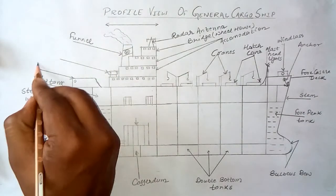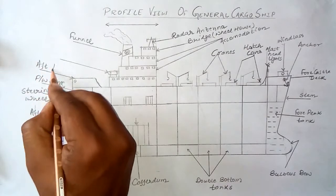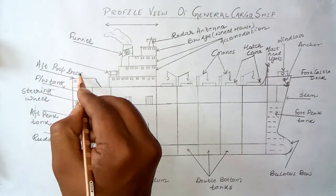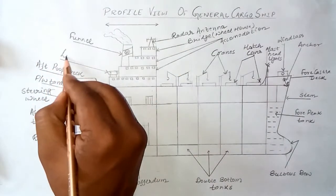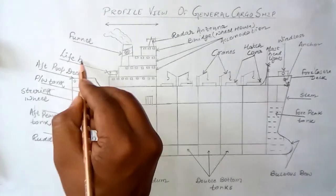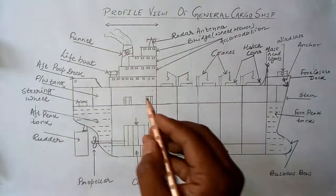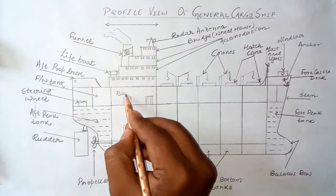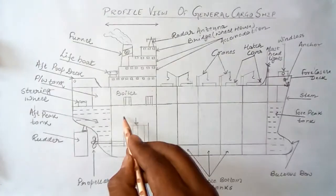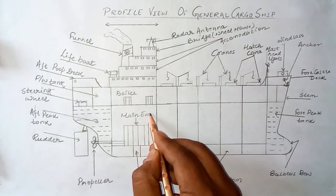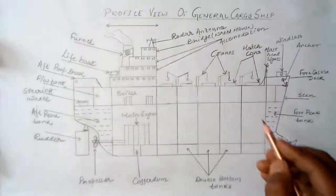We also label the freshwater tank, the aft peak tank, the aft peak deck, the lifeboat, the boiler, and the main engine.